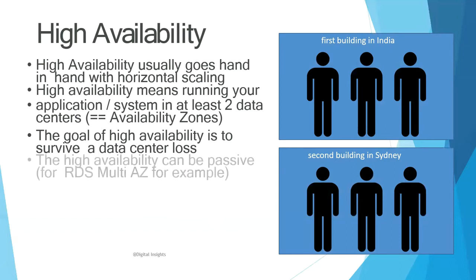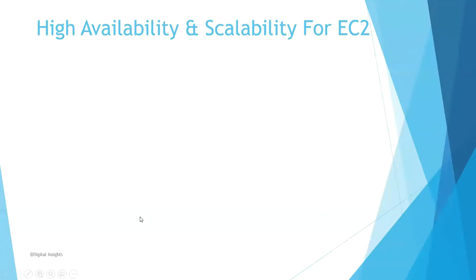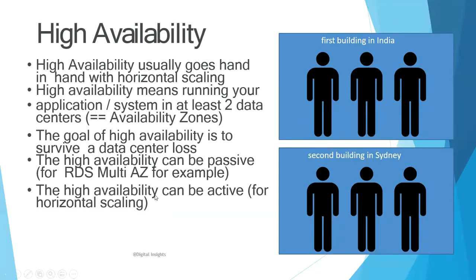High availability can be passive and there is also the active kind of high availability. For example, we have two data centers working side by side. If the building in India goes down, the Sydney building is able to take calls, so you have the continuity of your work going on.